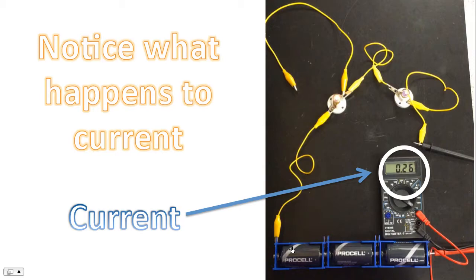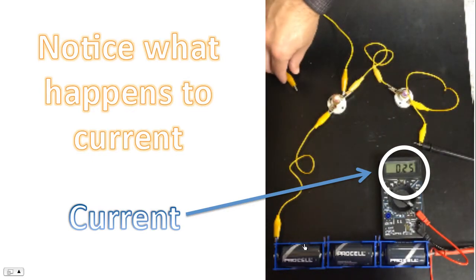Because this is a series circuit, it's effectively measuring the current through the entire circuit. Let's see what happens to current when I connect this wire in the circuit. So I'm connecting the wire now.